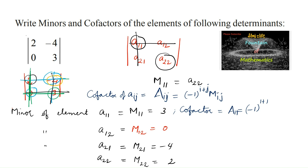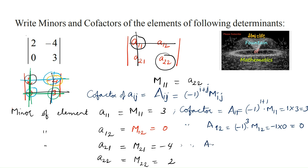So cofactor A11 is equal to (-1)^(1+1) into M11, which is (-1)^2 = 1, multiplied by 3, giving cofactor C11 equal to 3. For the second element, A12 is equal to (-1)^(1+2) into M12, that is -1 into 0, which is 0. Next, cofactor of a21 is equal to (-1)^(2+1), which is (-1)^3 = -1, into M21 which is -4. So -1 into -4 gives plus 4.